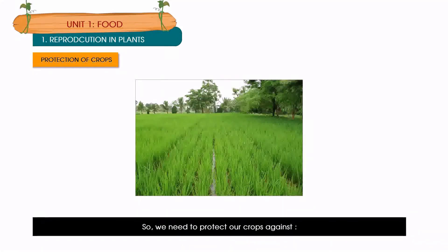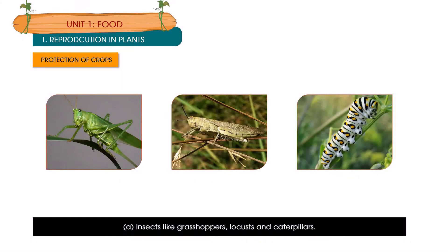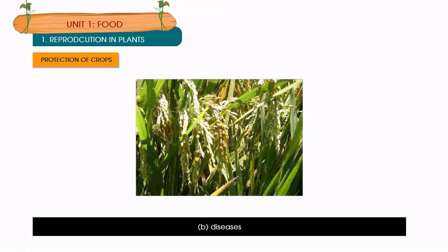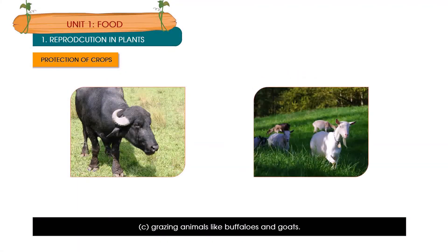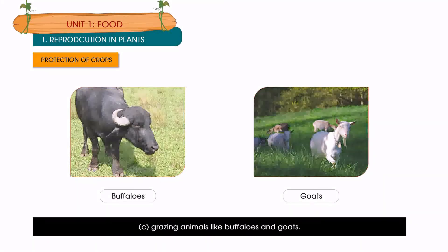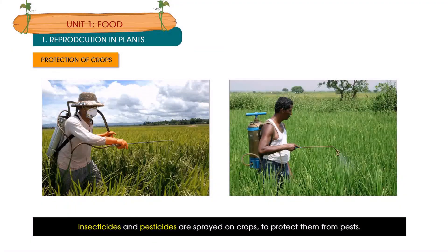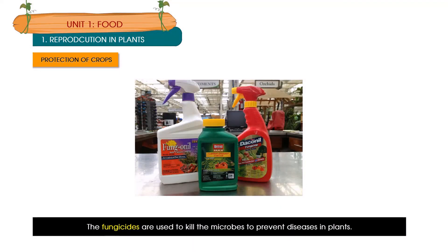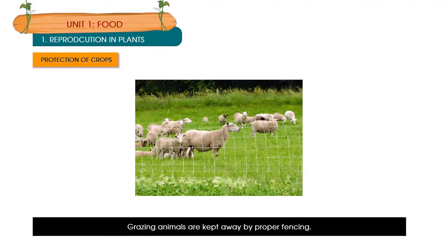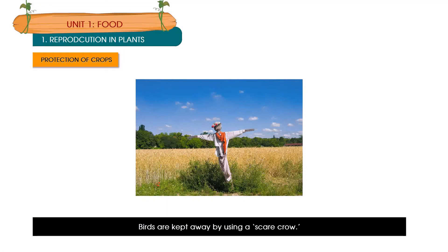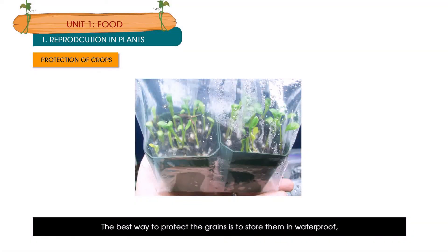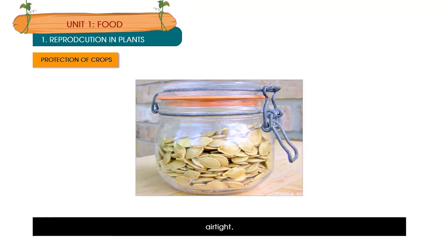Crops do not grow well if we do not take proper care. We need to protect our crops against insects like grasshoppers, locusts and caterpillars, diseases, and grazing animals like buffaloes and goats. Insecticides and pesticides are sprayed on crops to protect them from pests. Fungicides are used to kill microbes and prevent diseases in plants. Grazing animals are kept away by proper fencing, and birds are kept away by using a scarecrow. The best way to protect grains is to store them in waterproof, insect-proof, airtight, sealed plastic containers.